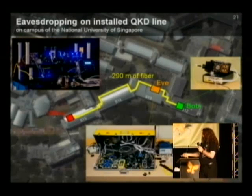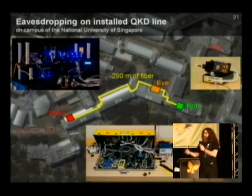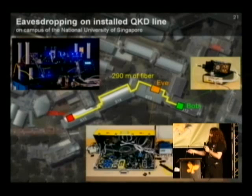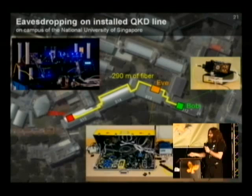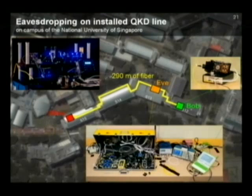We aligned Eve, then restarted the whole communication, and Alice and Bob ran quantum key distribution again. We monitored and recorded the parameters that Alice and Bob monitor, and their statistics were just the same as before the attack. They ran perfect quantum key distribution, even though now there was Eve in between running an intercept-resend attack and having a complete copy of the key.